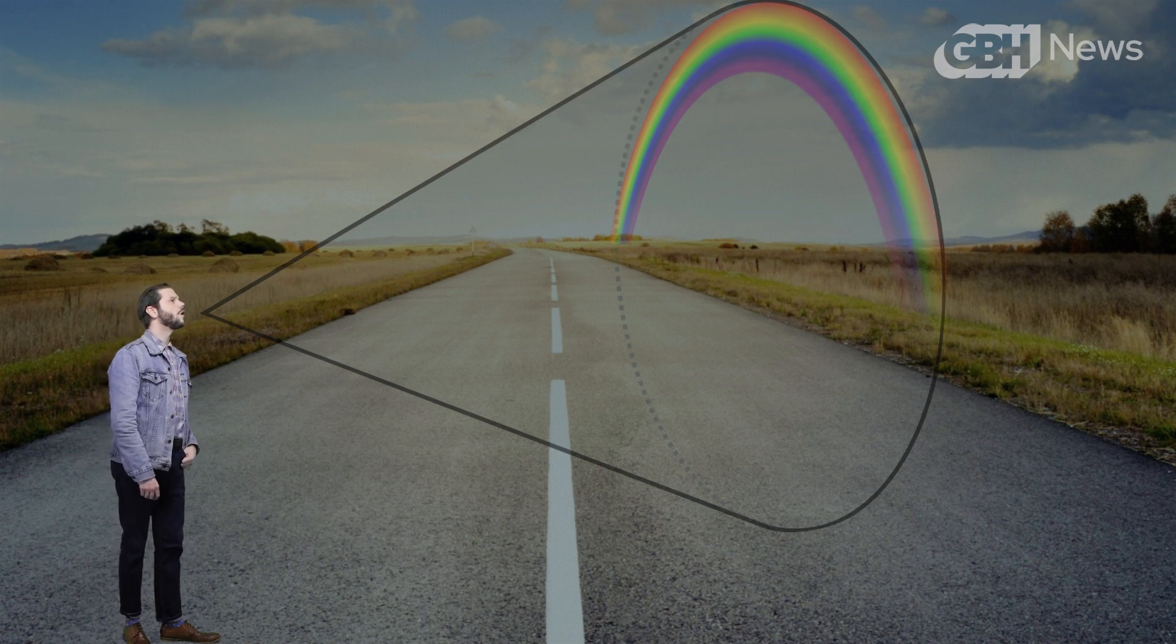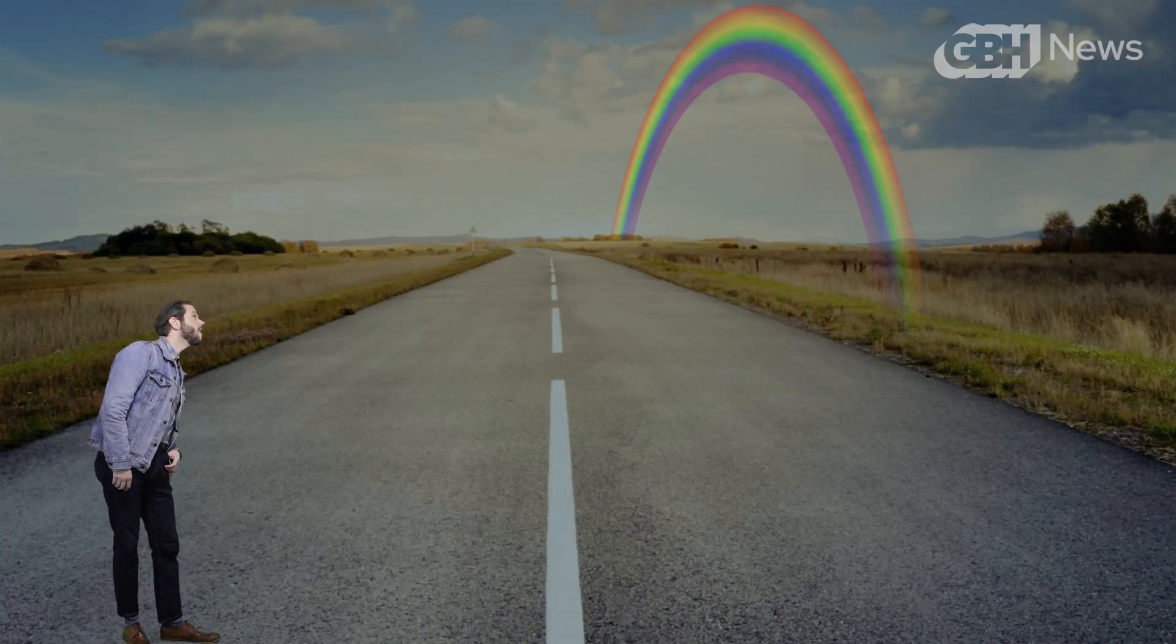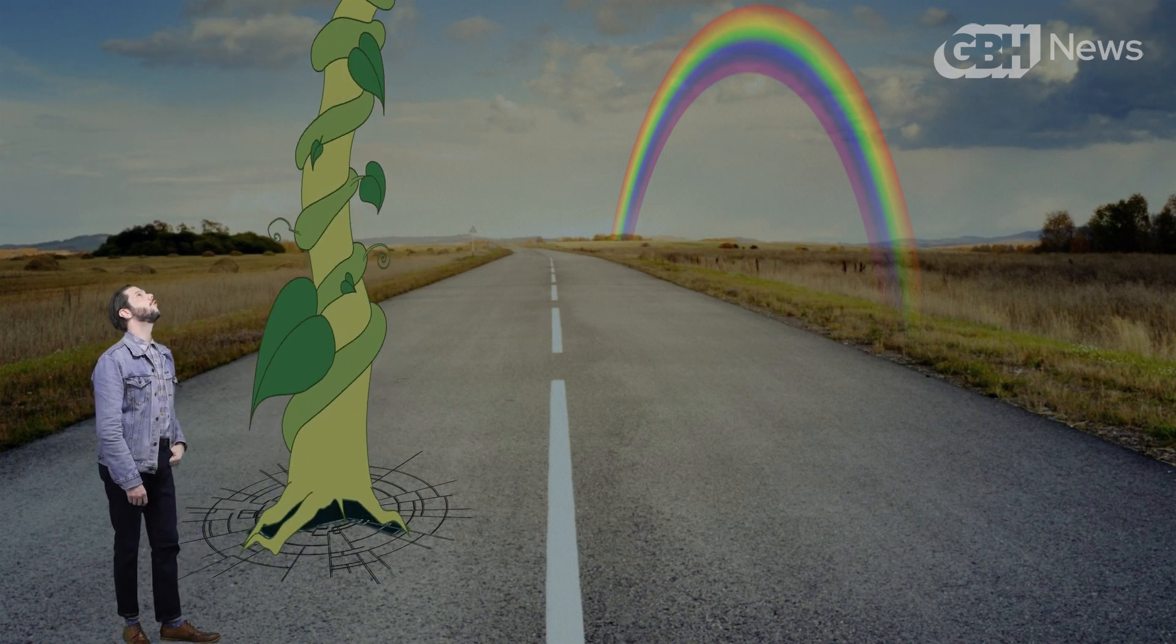Now as for why the entire circumference doesn't light up like a rainbow? Well, the ground gets in the way. If you could get up high enough so that there's a lot of rain below your feet, well, Cole says, imagine you're Jack on a beanstalk.